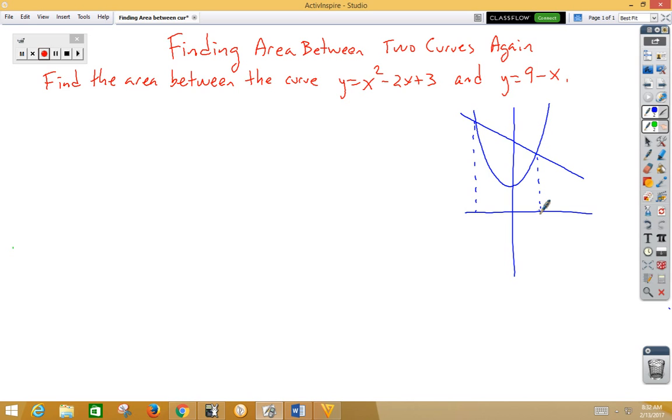We're going to set the two functions equal to each other. 9 minus x is equal to x squared minus 2x plus 3. Since it's a quadratic, let's set that equal to 0. So, I've got x squared. If I add the x over, I get negative x. If I subtract the 9 over, I get a negative 6.